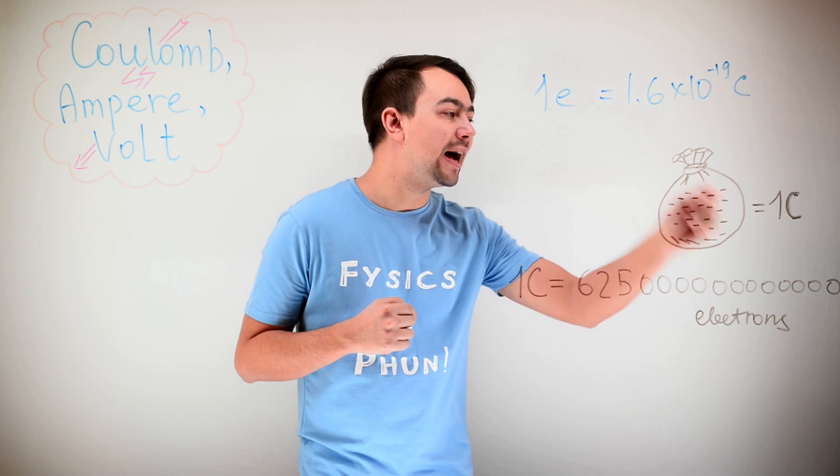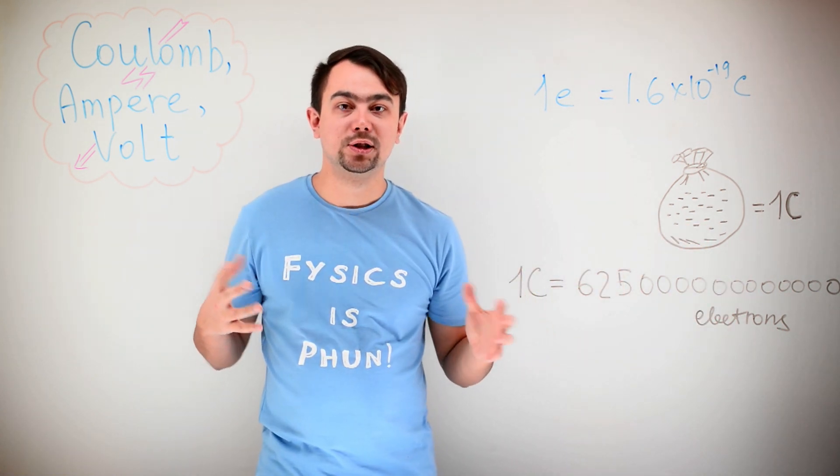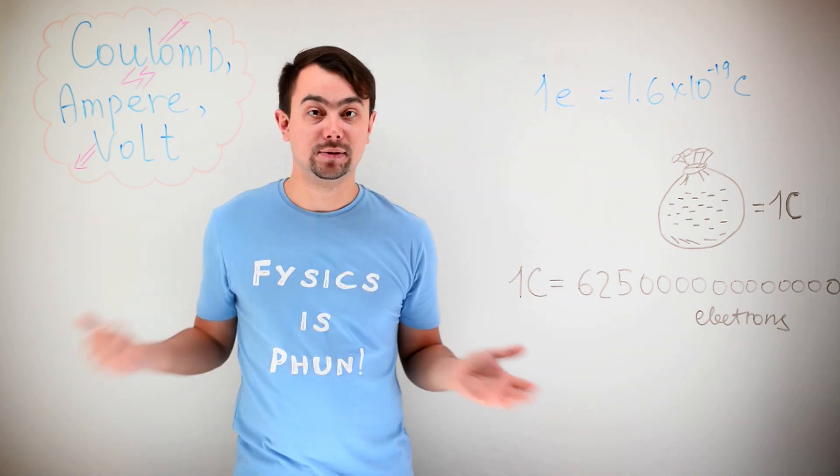So, a bag containing this amount of electrons is called a Coulomb. So, when I say Coulomb, I mean a bag of electrons. That's it!